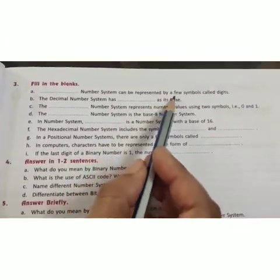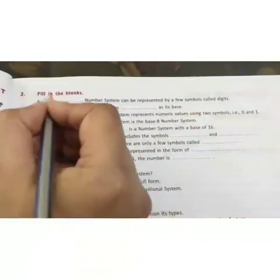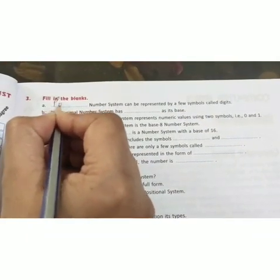First one. Positional number system can be represented by a few symbols called digits.